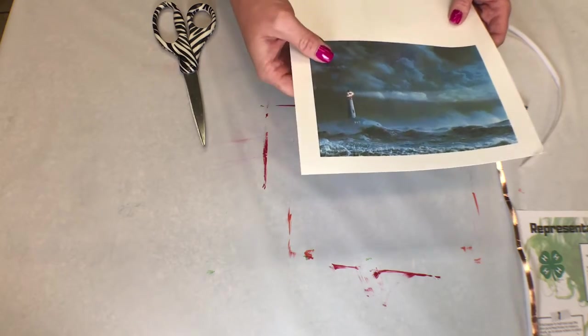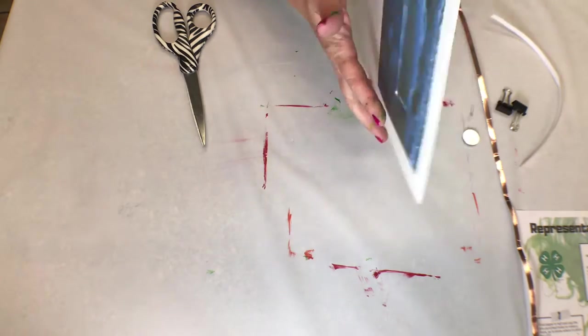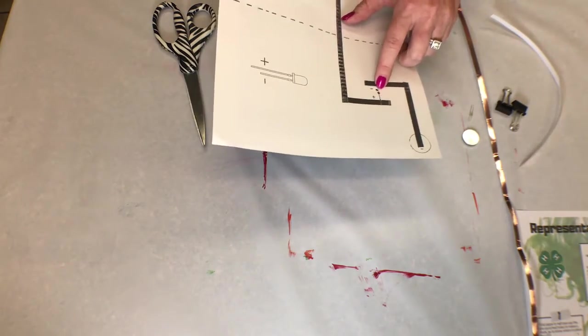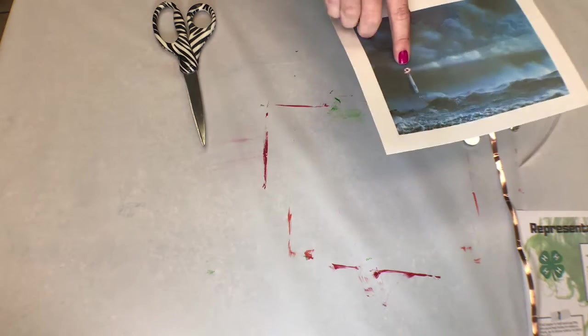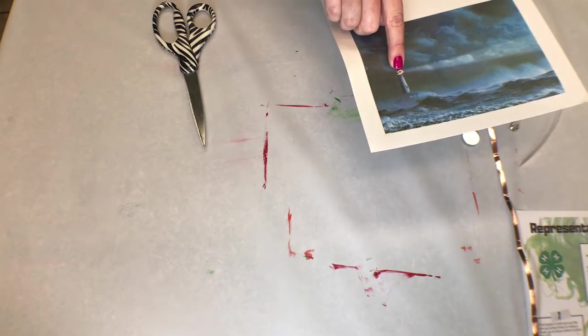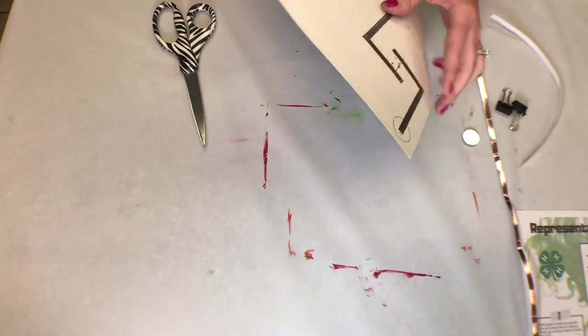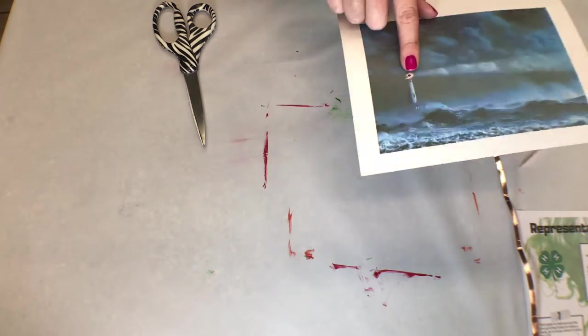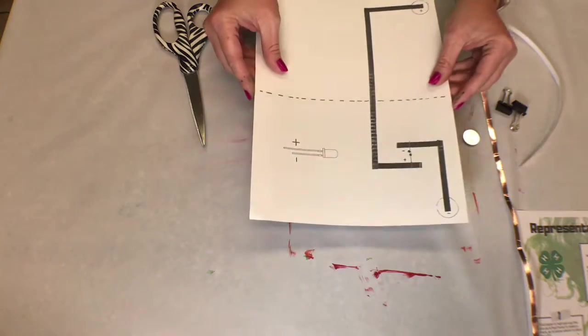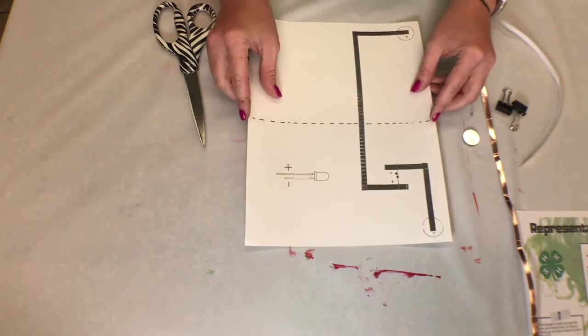What I went ahead and did is where the lighthouse light is, I took a toothpick and I poked a hole right there, because our copier on the back didn't line up the dot just right, and it's very important that the bulb itself is going to be in this lighthouse light on the picture. So you're going to poke that hole first.